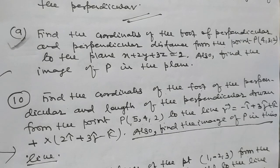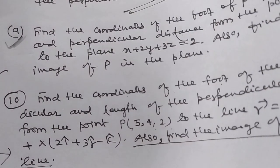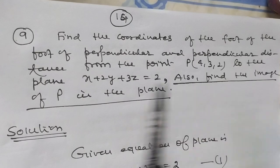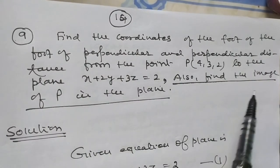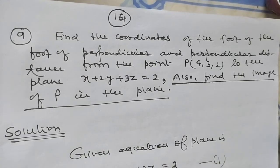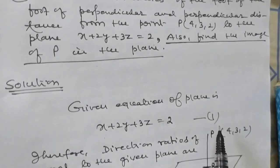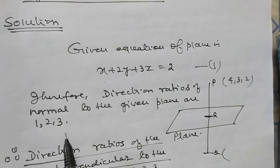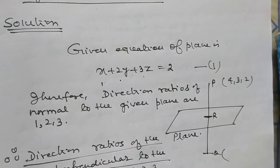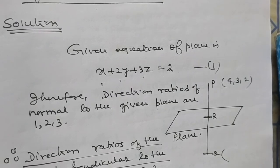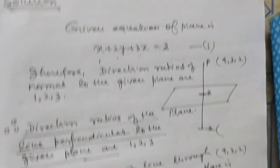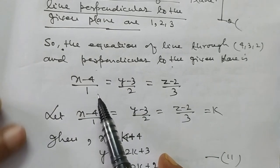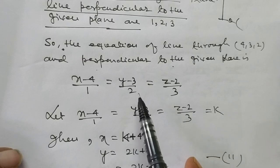My dear colleagues, now I want to solve problem number 10 — problem number 9: find the coordinates of the foot of the perpendicular and perpendicular distance from the point to the plane. Also find the image. Given equation of plane is x + 2y + 3z = 2 and there is a point (4, 3, 2). It is clear that the direction ratios of this plane are 1, 2, 3.